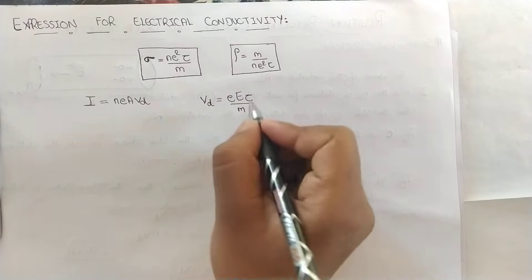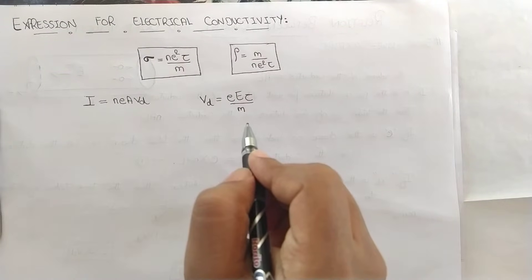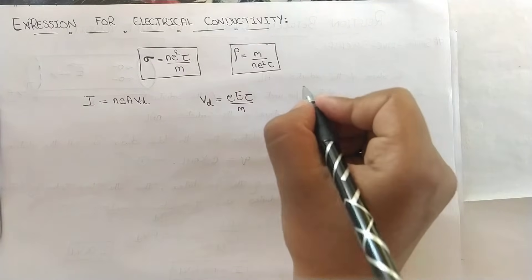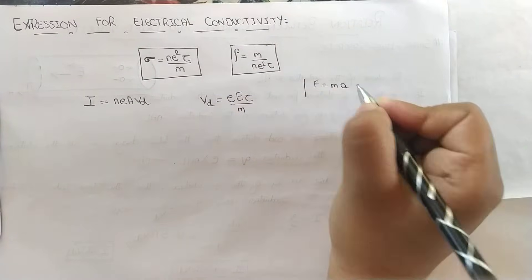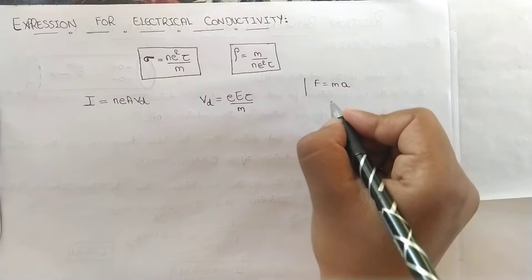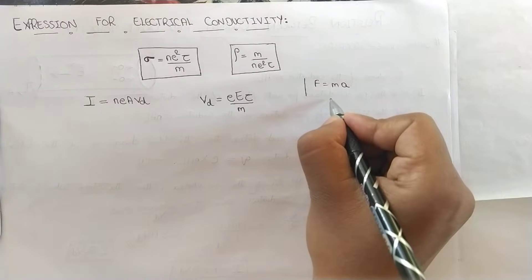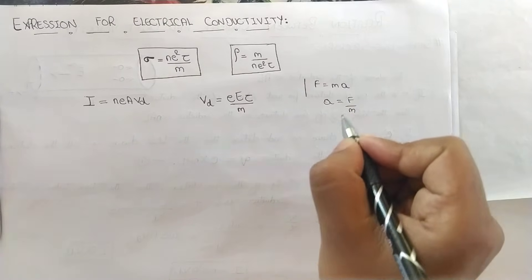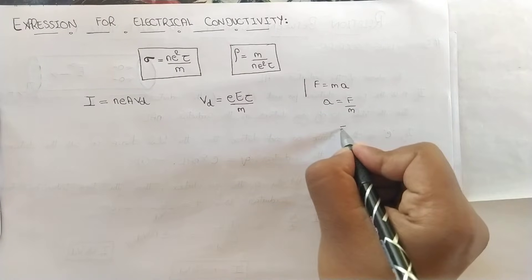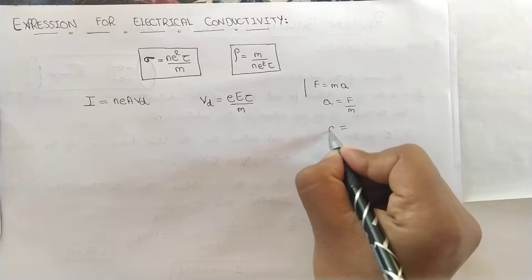I hope you know this equation from your previous studies in this chapter. If you don't know, let me tell you in short. F equals MA, this is mass into acceleration. Then what is acceleration? Acceleration is equal to F by M. And in this chapter, what we can substitute in the place of F?